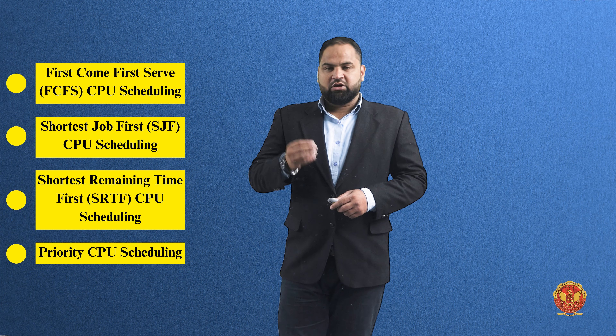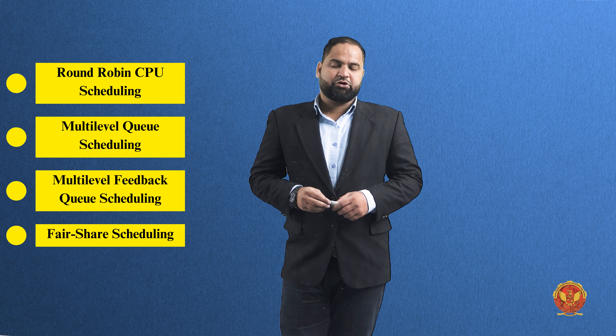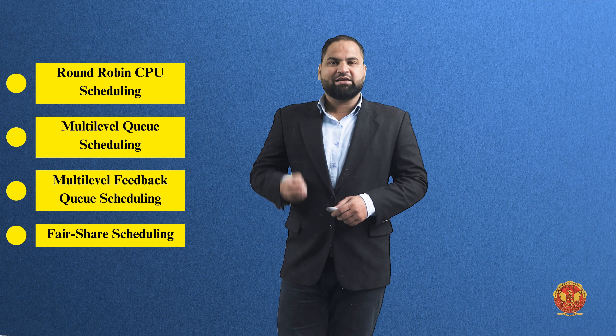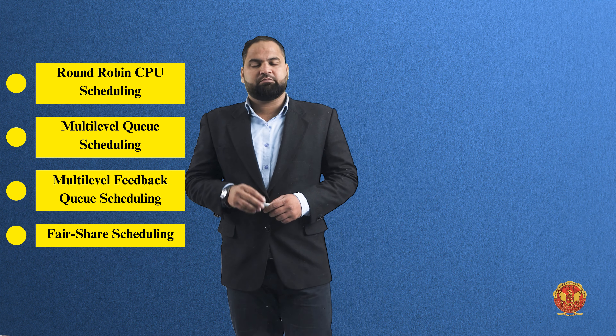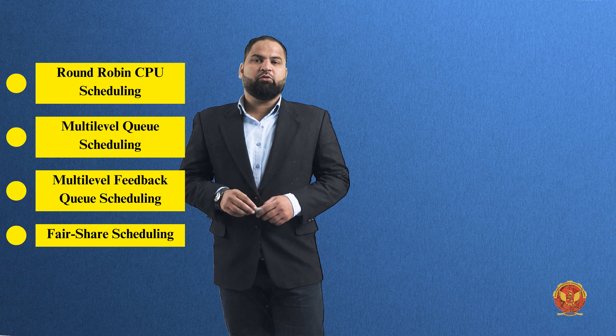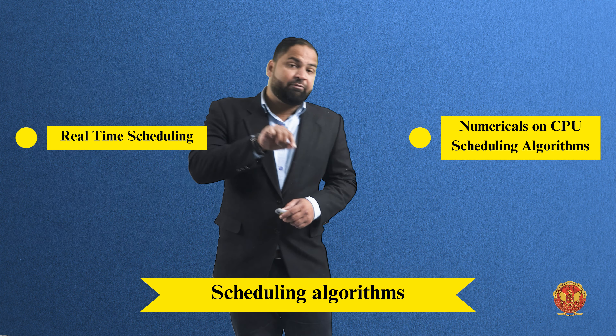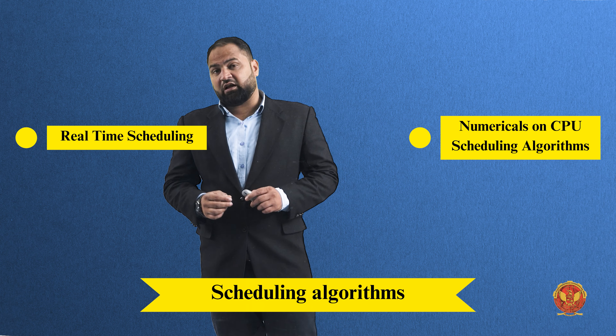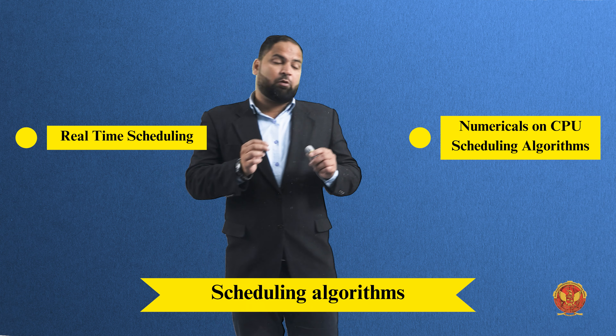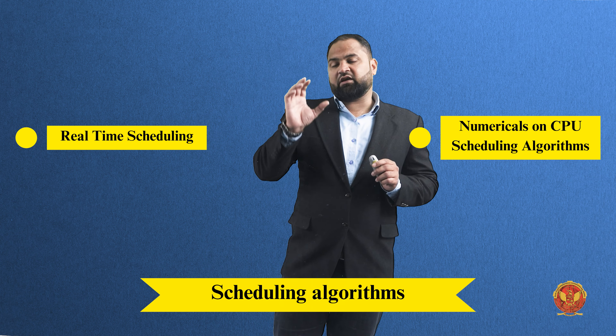The remaining scheduling algorithms are: Shortest Job First, Shortest Remaining Time First, Priority CPU Scheduling, Round Robin, Multi-Level Queue, Multi-Level Feedback Queue Scheduling, Fair-Share Scheduling, and Real-Time Scheduling. We will study every topic of each one in detail.